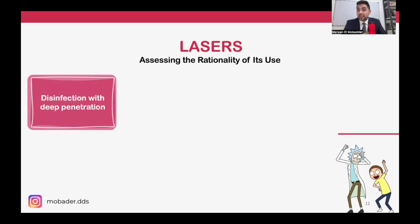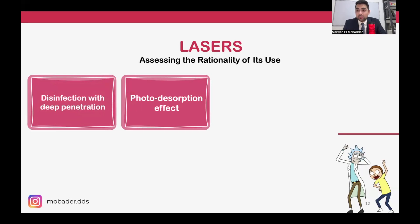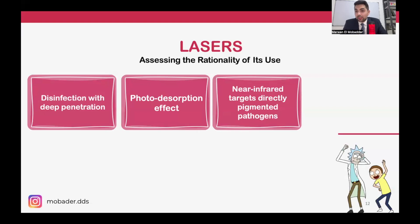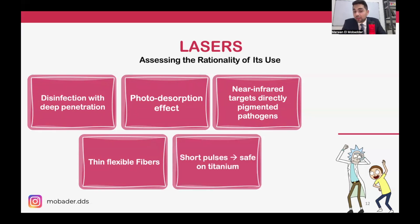Why lasers? Lasers present deep penetration, which enhances the limitations of mechanical debridement — with mechanical debridement you can only clean what you can touch. There is also a photodesorption effect. Most importantly for managing peri-implantitis, the near-infrared light of the laser can directly kill pigmented pathogens, such as Porphyromonas gingivalis and Aggregatibacter actinomycetemcomitans, which are linked to peri-implantitis. Additionally, lasers have thin flexible fibers and can be safe on titanium using short or super-pulsed modes.